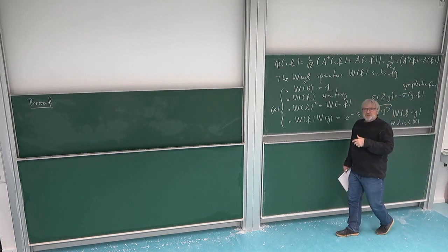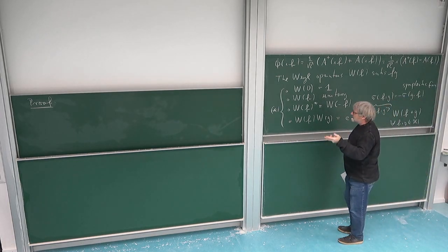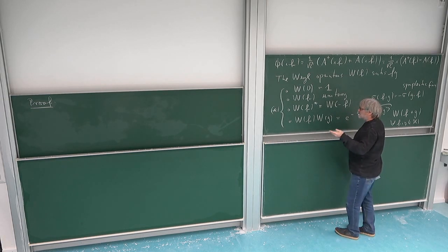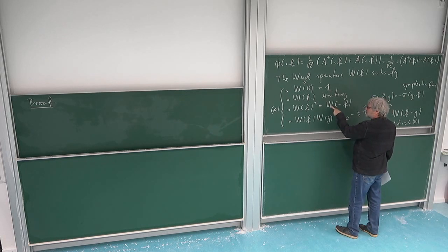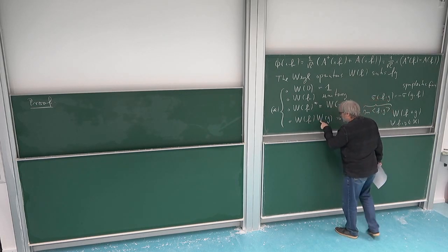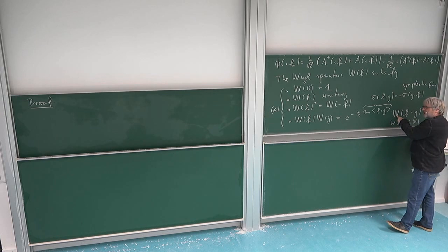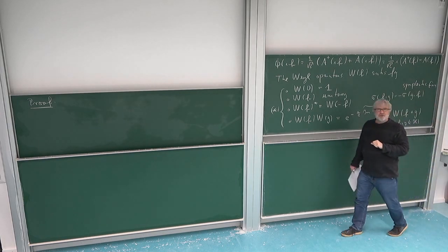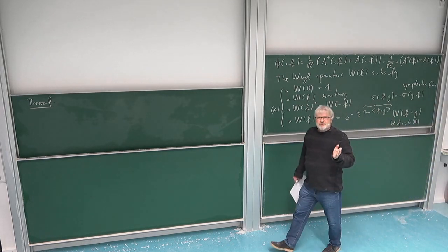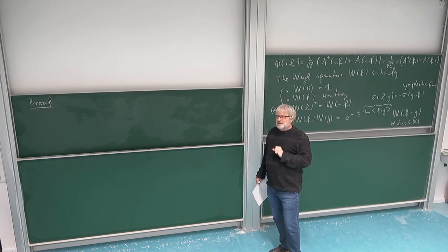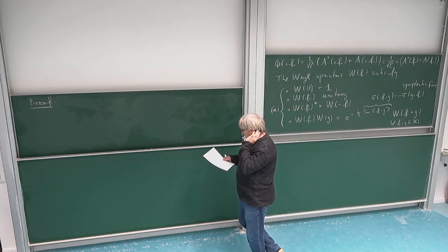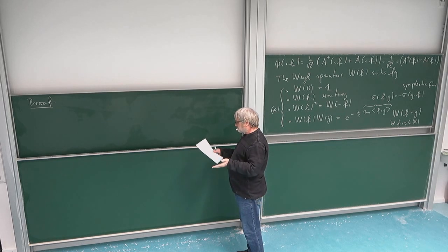So what this means is the algebra, or even the star algebra — in principle I should look on the star algebra — but I can forget the star because this is just given by another W, and I can also forget the product because this is also given by another W. So what I just have to consider is the linear span of the W's.